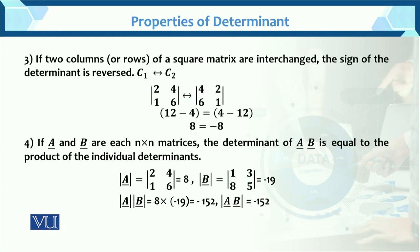The third property: if two columns or rows of a square matrix are interchanged, the sign of the determinant is reversed. For example, matrix [2, 4; 1, 6] has determinant = 8. If we interchange the two columns, the sign of the determinant reverses, giving determinant = −8.